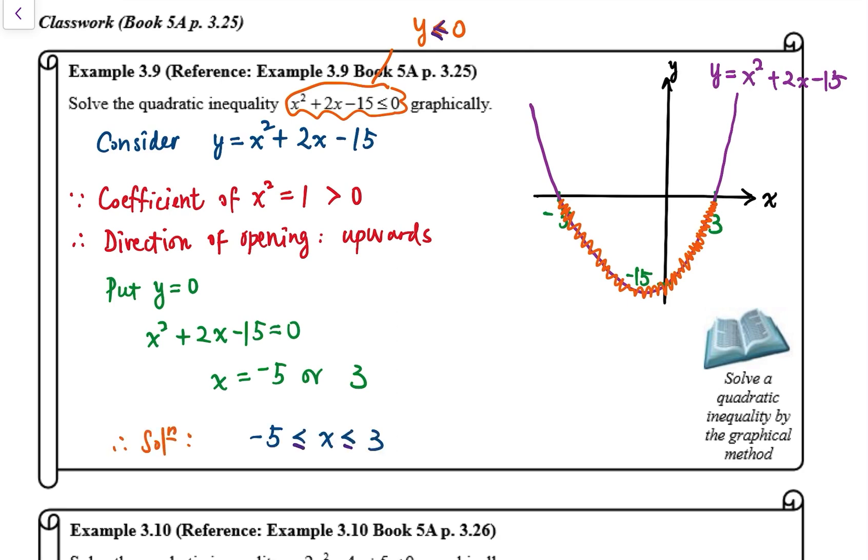So the solutions to the quadratic inequality are x less than or equal to 3 greater than or equal to negative 5. So make sure we follow the same inequality sign. At the very beginning, we have less than or equal to 0. So that's why we have x less than or equal to 3 greater than or equal to negative 5.